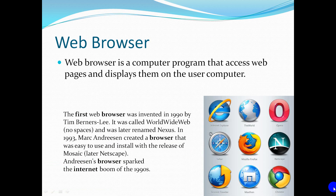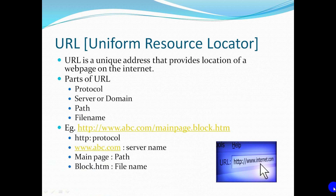A Web Browser is a computer program that accesses web pages and displays them on the user's computer. A URL is a unique address that provides the location of a web page on the Internet. The parts of a URL are: protocol, server or domain, path, and file name.